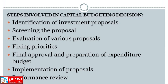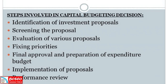The steps of capital budgeting are: identification of investment proposals, screening of proposals, evaluation of various proposals, fixing priorities, final approval and preparation of expenditure budget, implementation of proposals, and performance review.